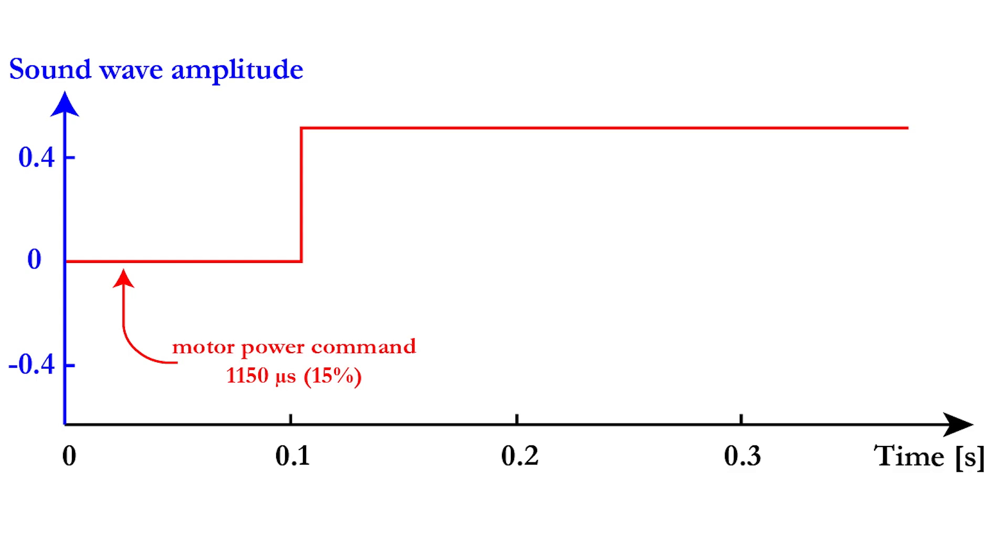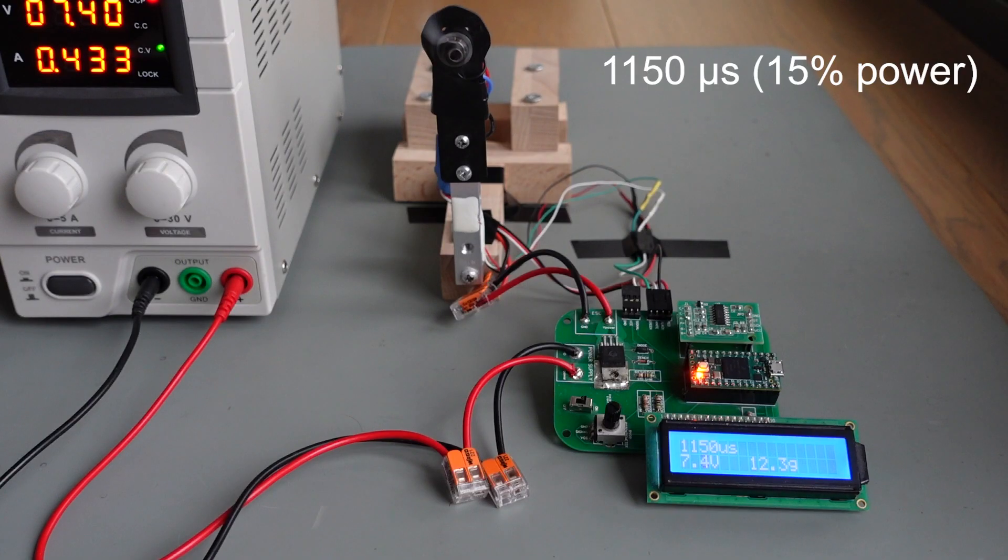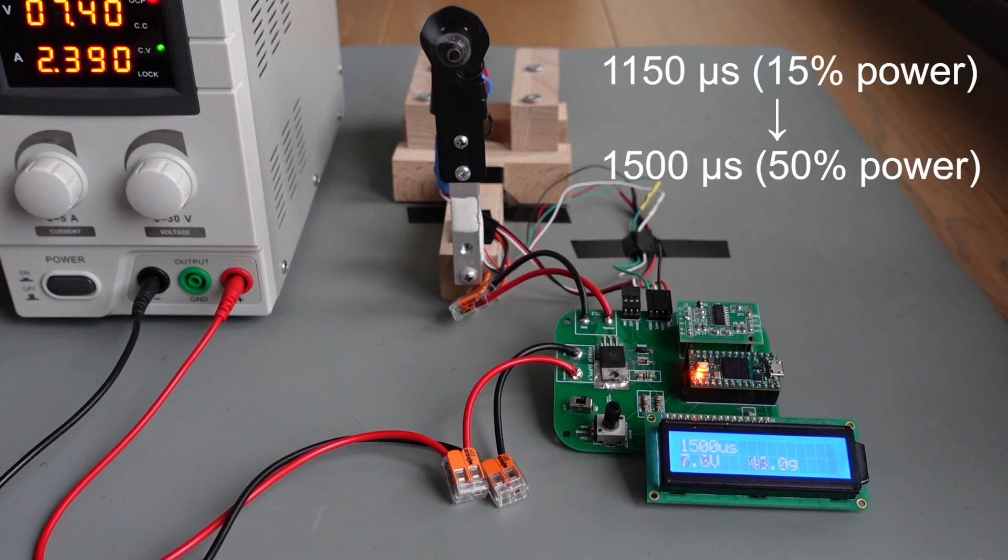let's create a motor power command that goes instantaneously from 11.5% of throttle to 50%. We will record the sound during this step in motor power and plot the sound wave amplitude on this graph. The power step is generated automatically by our TNC to be able to generate a pure step response.